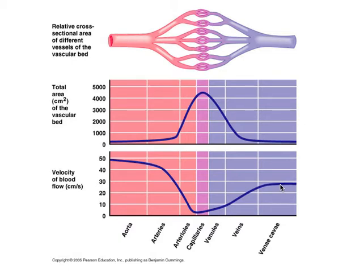At the aorta, the velocity of blood flow is 40 to 50 centimeters per second. This is at rest. The cross-sectional area of the arteries is 2.5 centimeters squared.